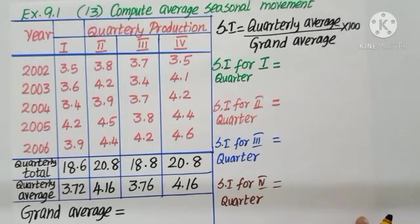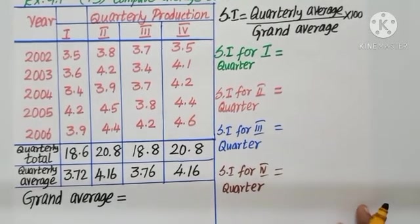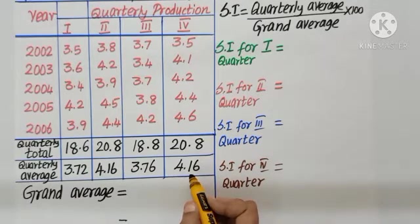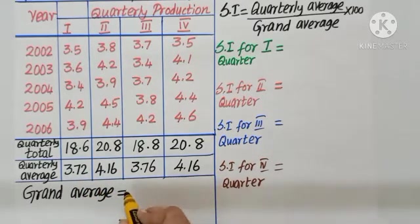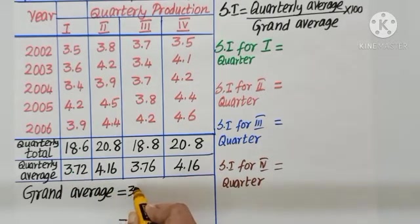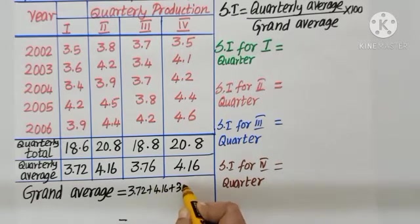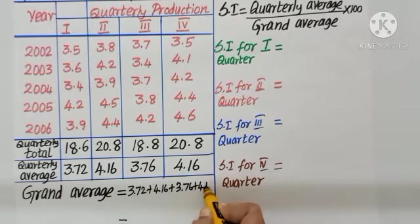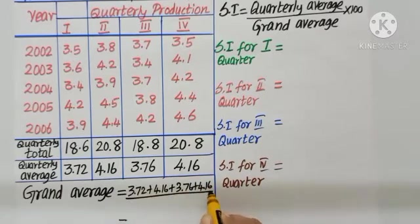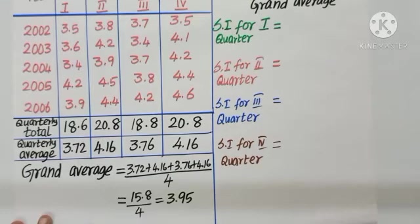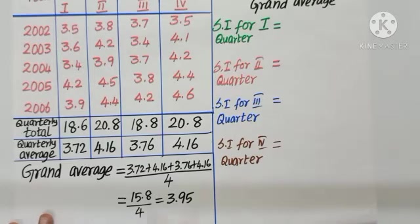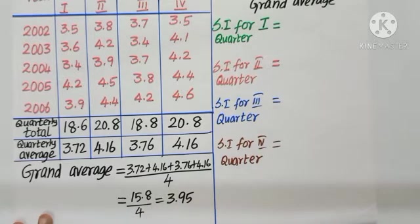Now, we need to find grand average. What do you mean by the word grand average? Add all the averages. What all I have? 3.72, 4.16, 3.76, 4.16. Divide by 1, 2, 3, 4 values. Add them all, divide by 4. We get 15.8 by 4, that is 3.95.